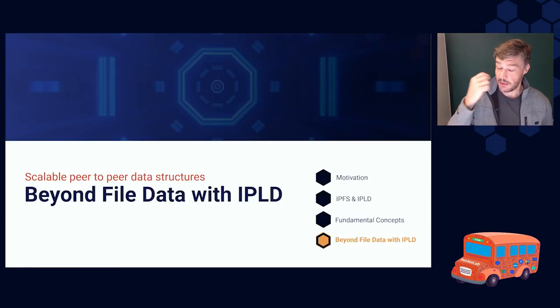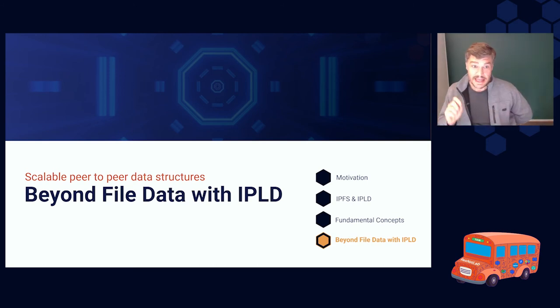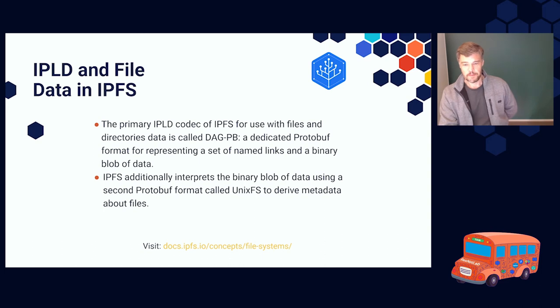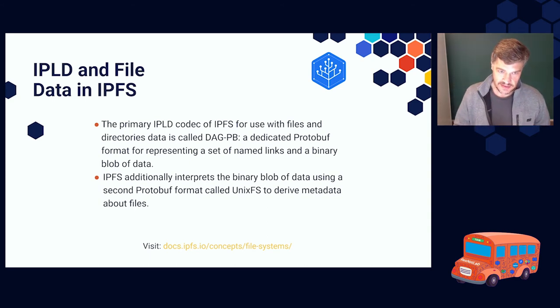Beyond file data with IPLD. Now we've been thinking a lot about file data with IPFS. We need to get beyond file data, because the power of IPLD is not in file data, it's in the complex link data structures. So the primary IPLD codec that IPFS uses for files and directories is called DAG PB. PB for protobuf. It's a dedicated protobuf schema for representing an array of named links, and also a binary blob of data. That's all it does.